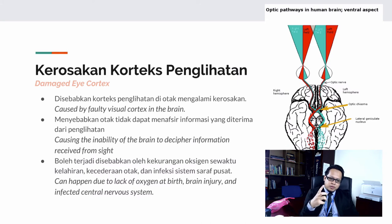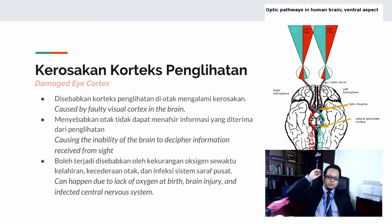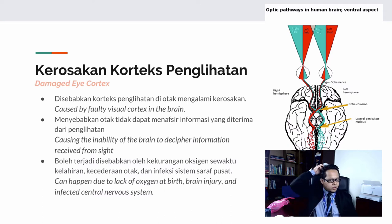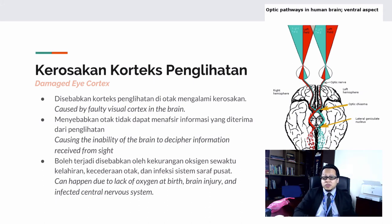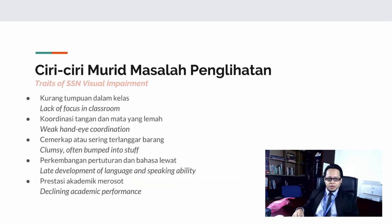Damaged eye cortex: this disability is caused by a faulty visual cortex in the brain. Based on the diagram, the visual cortex is located at the back of the brain. This causes the brain's inability to decipher the visual information received by the eyes — your eye can see, but the visual cortex cannot make sense of it. This can happen due to lack of oxygen at birth, brain injury, or an infected central nervous system.